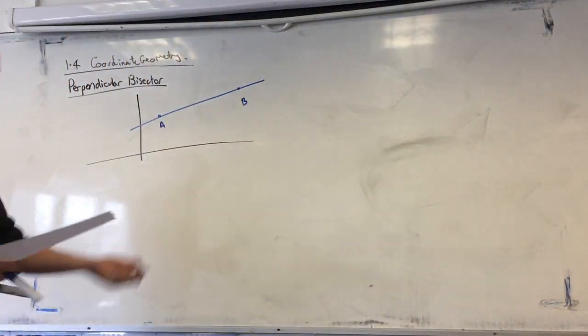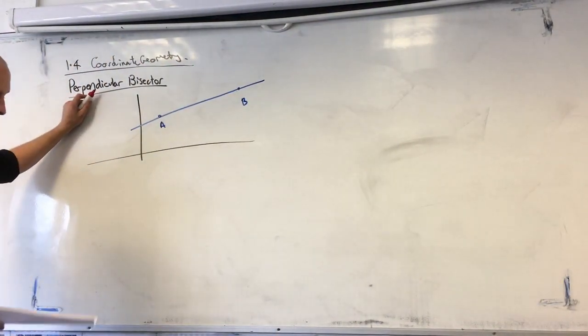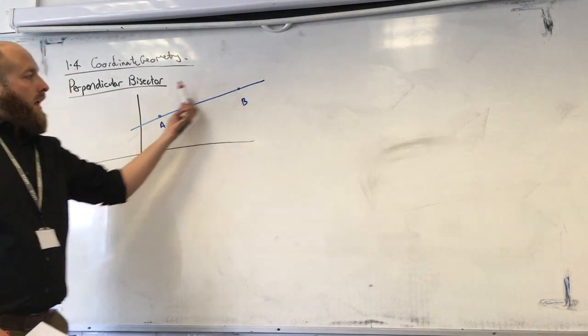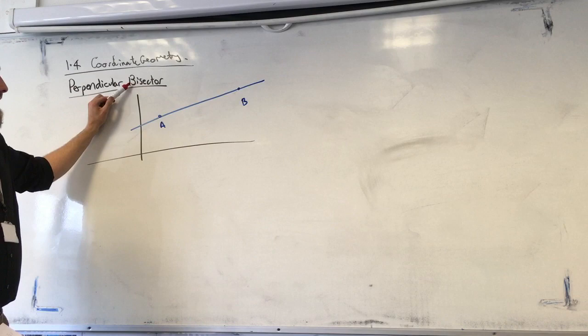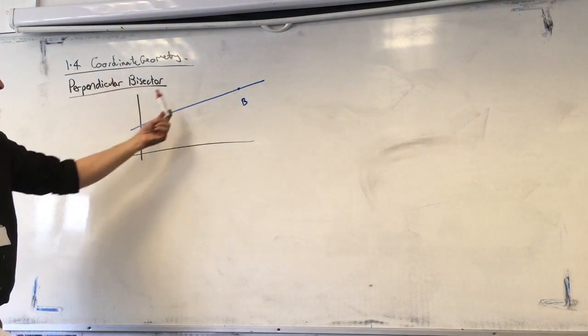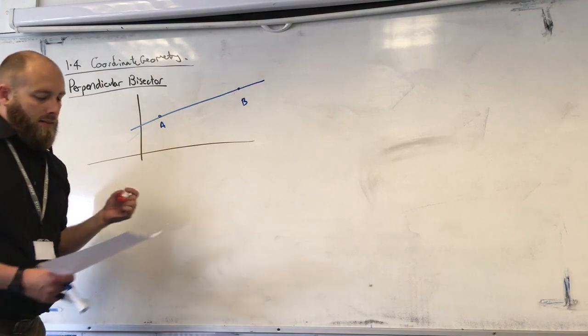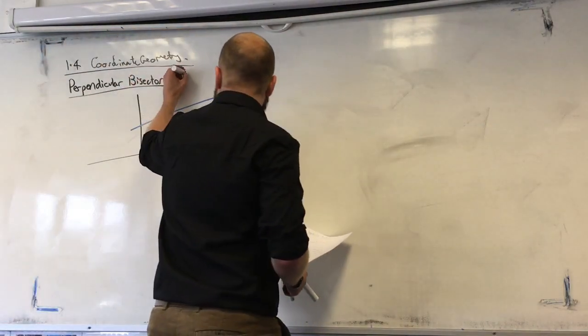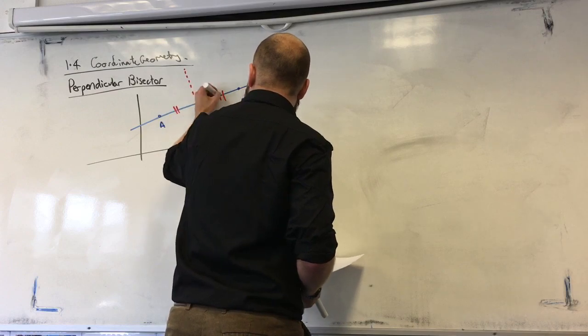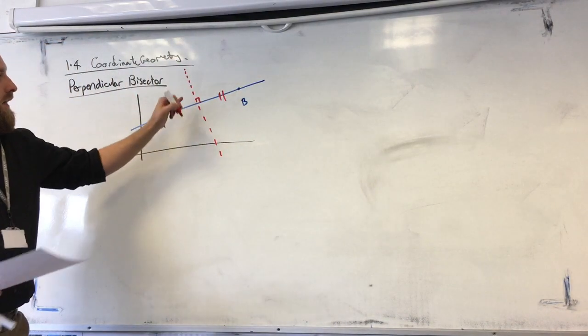So perpendicular bisectors, if we break down the words, perpendicular means it's going to be a line at a right angle to this line. And bisector means it cuts it, bisect, and by two, it's going to cut this into two evenly lengthed bits.